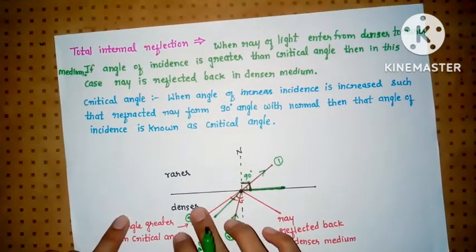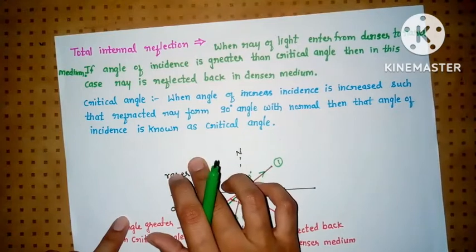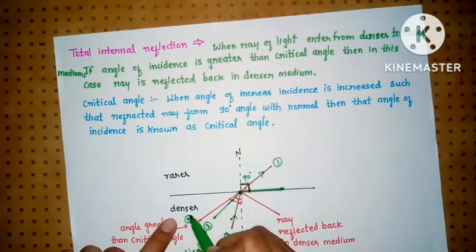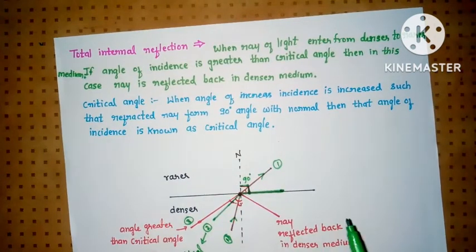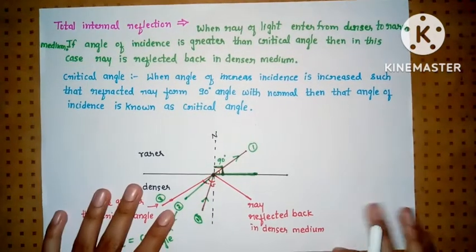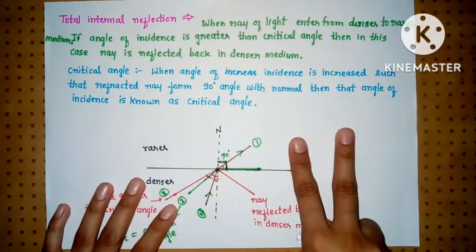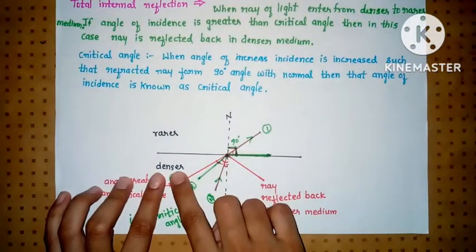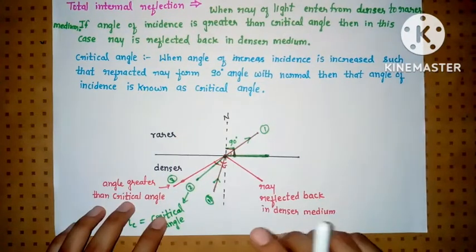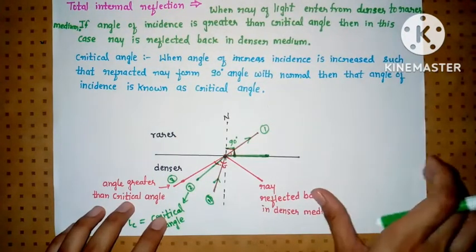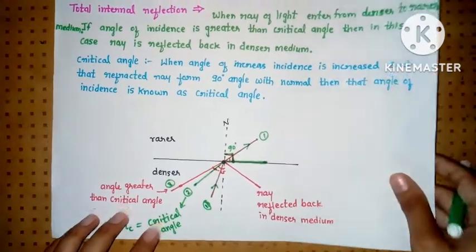This is only possible when light enters from denser to rarer medium. The opposite is not possible. So total internal reflection has two conditions: first, light must travel from denser medium to rarer medium, and second, the angle of incidence should be greater than the critical angle.